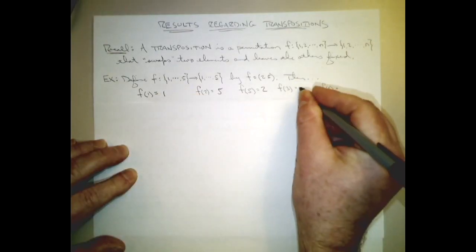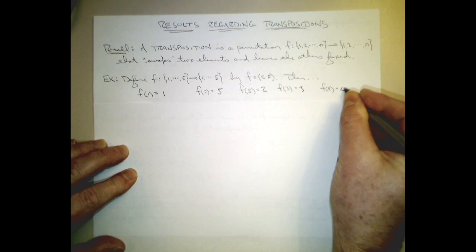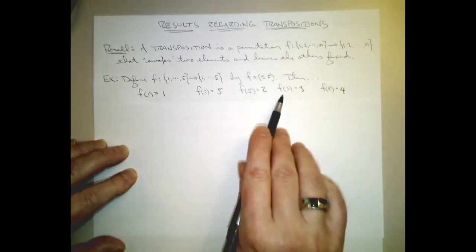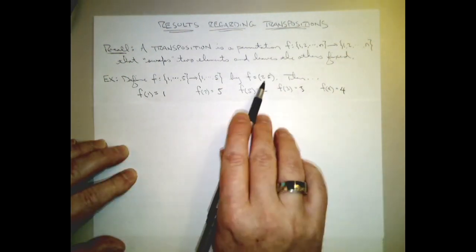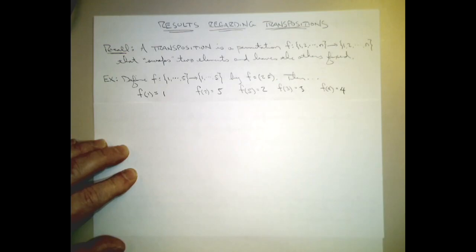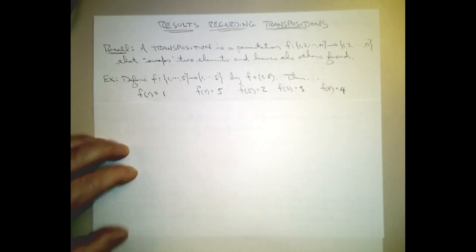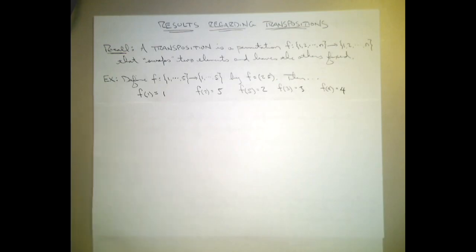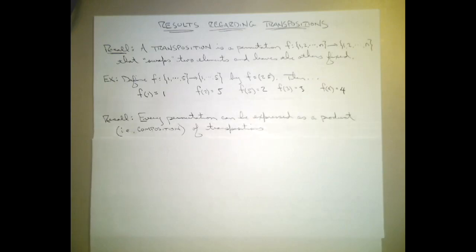It's going to send 3 to 3. It's going to send 4 to 4. 1, 3, and 4 are not included in the cycle, so they get fixed. I want you to recall also - this was one of the last things we talked about before spring break - that every permutation can be expressed as a product of transpositions.